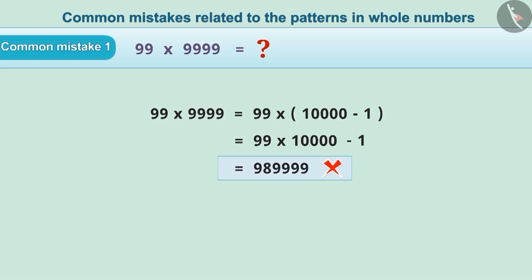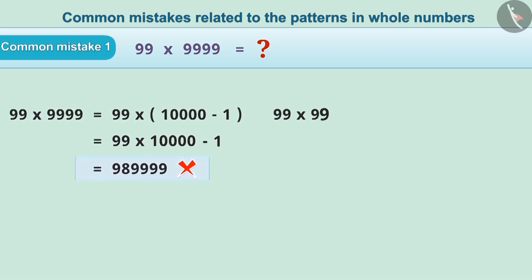As a result of this mistake, we get 989,999, which is an incorrect answer. The correct method is to represent 99 multiplied by 9999 as 99 multiplied by 10,000 minus 1.